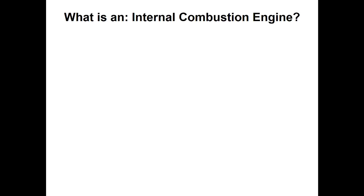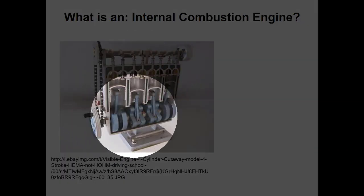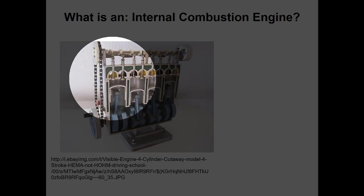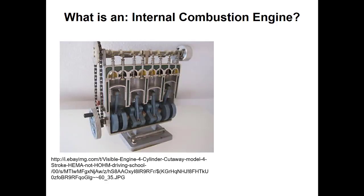An internal combustion engine looks like this: a four-cylinder engine with a spinning shaft and pistons moving up and down inside cylinders. There are two valves per cylinder — one for intake of fresh air, and one for exhaust of the burned air-fuel mixture. We're essentially expelling used fluid (containing CO2, CO, and other combustion products) and replacing it with fresh air.